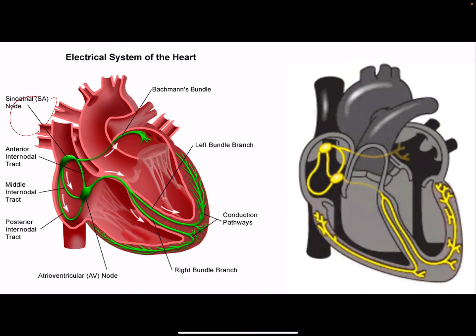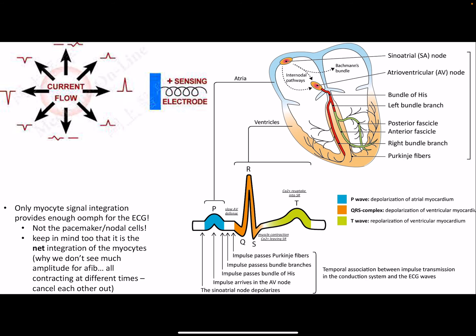We've talked about the SA node to AV node to bundle of His to Purkinje fibers. When current moves from the SA node in this direction toward the Purkinje fibers, a lead like Lead II picks up the positive ions — sodium and calcium coming in — as positive current moving in that direction, giving us an upward deflection.